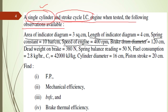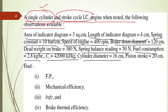Engine speed is 400 RPM. Brake drum diameter is 120 centimeters. Dead weight on the brake is 380 newton. Spring balance reading is 50 newton. Fuel consumption is 2.8 kilogram per hour. Calorific value of the fuel is 42,000 kilojoule per kilogram. Cylinder diameter is 16 centimeters. Piston stroke length is 20 centimeters.